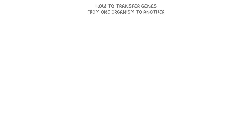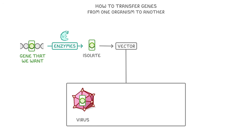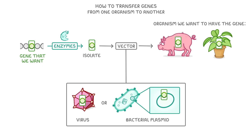The last thing we need to cover is how we actually transfer the gene from one organism to another. The first step is to find the gene that we want, and then cut that section of DNA out to isolate it, which we do using enzymes. Next, we insert the gene into a vector, which could either be a virus or a bacterial plasmid — those little loops of DNA that bacteria have. We then introduce the vector to whichever organism we want to have the gene, for example a pig or a plant. The organism's cells will take up the vector and the useful gene it contains, and so they'll start producing the protein that the gene codes for.